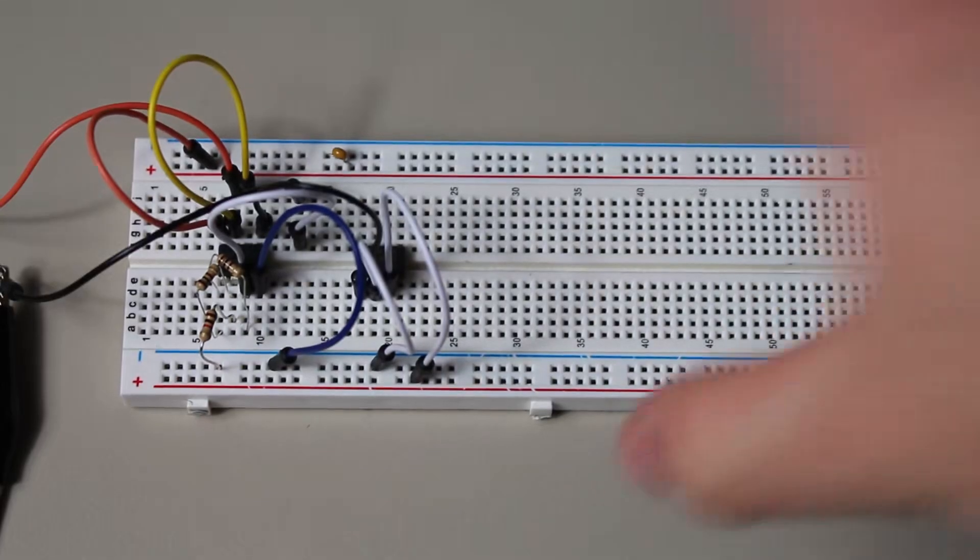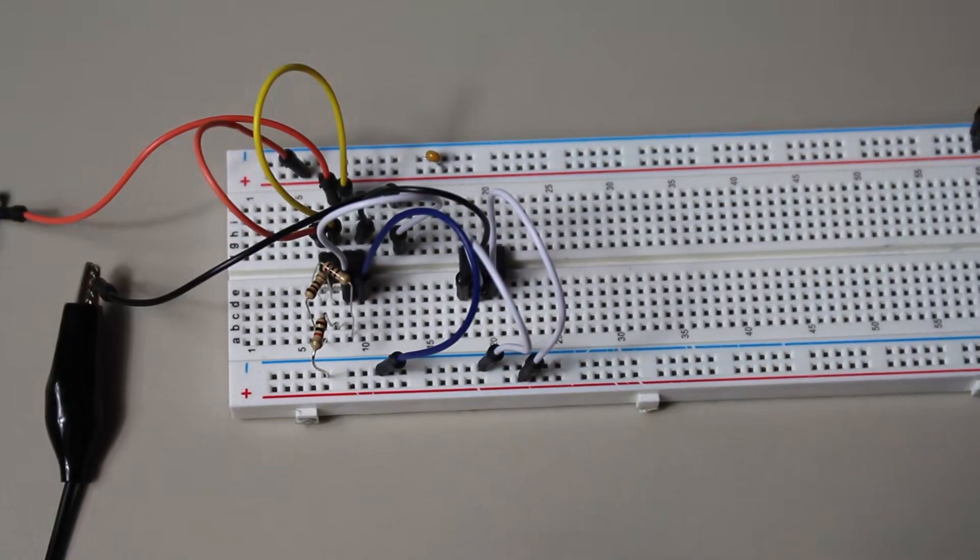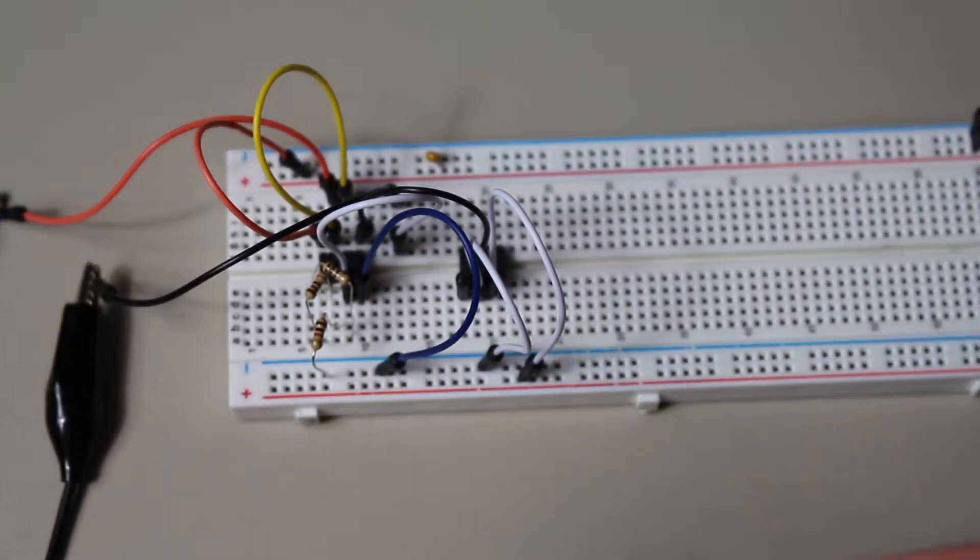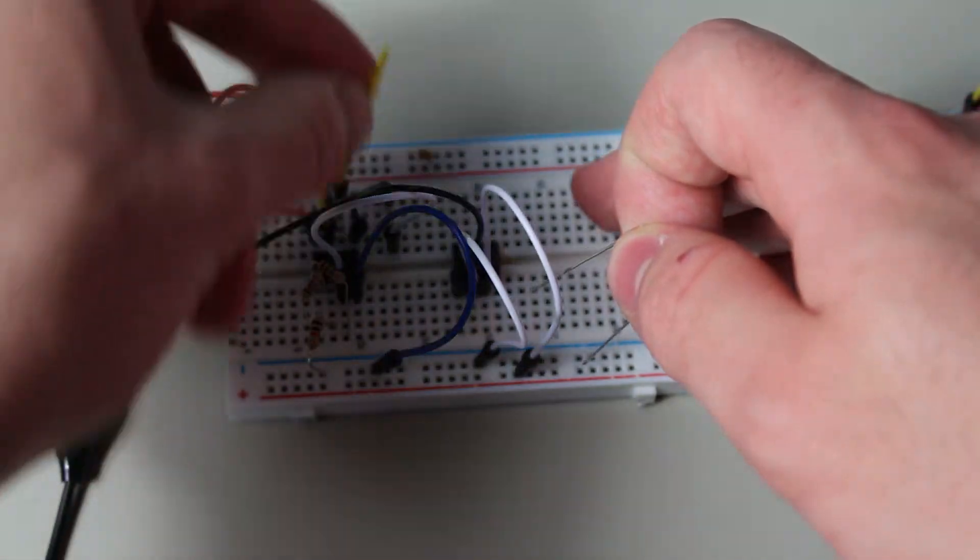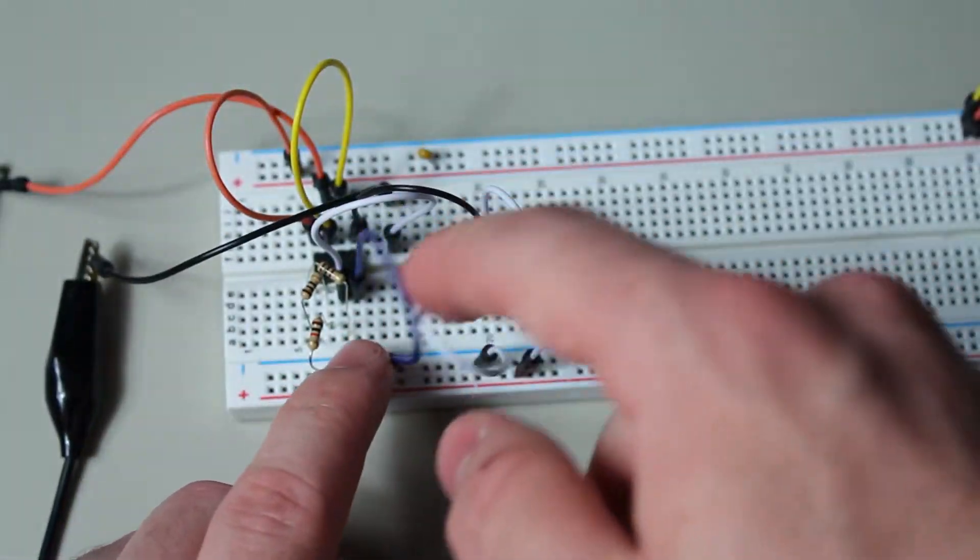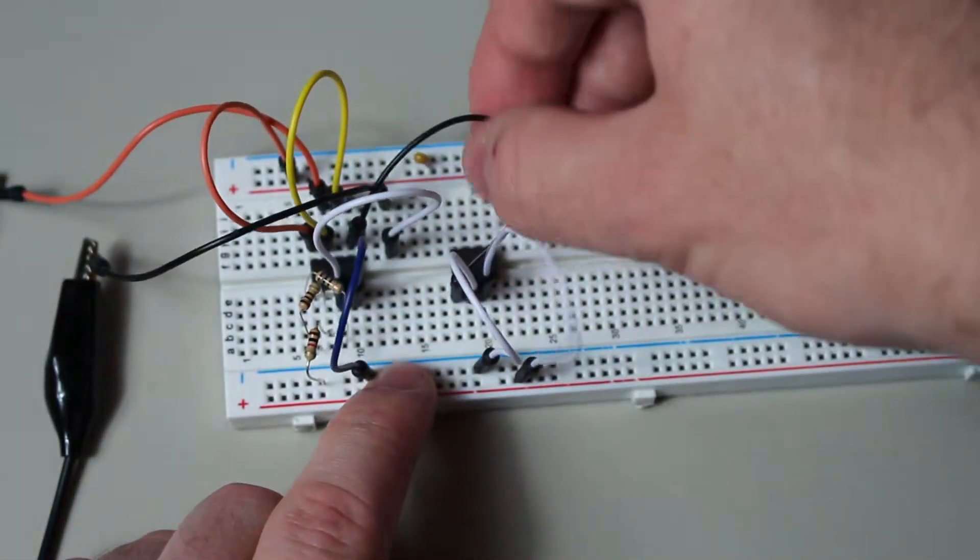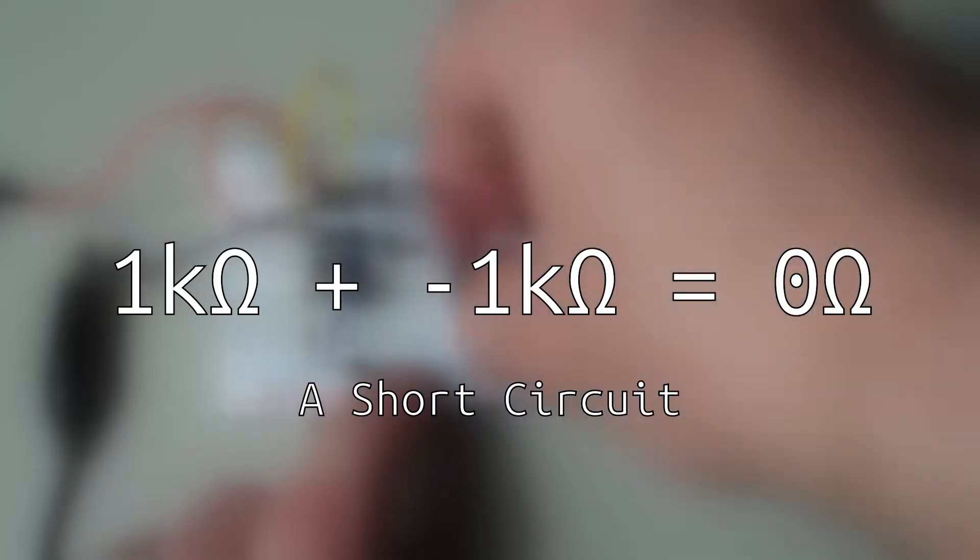Now that we can simulate negative resistance, you might be thinking of ways that you can use it. For example, you should know that resistors in series add up. So two 1k's in series should equal a total resistance of 2k. Sounds good, but what if we combine a 1k and a negative 1k in series?